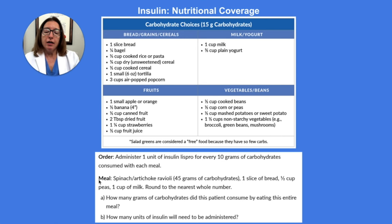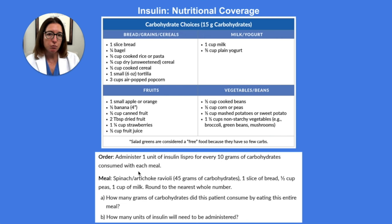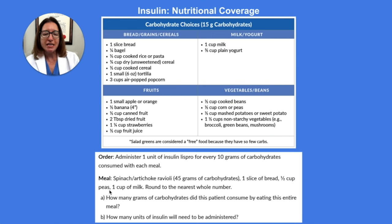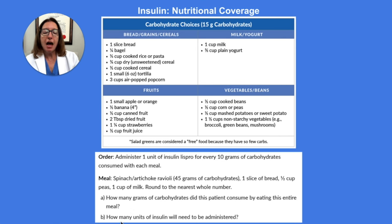In our example, we have an order to administer 1 unit of insulin for every 10 grams of carbohydrates consumed with each meal. Our patient consumed spinach and artichoke ravioli (45 grams of carbohydrates), one slice of bread, a half cup of peas, and one cup of milk. We need to determine how many grams of carbohydrates the patient consumed and how many units of insulin to administer.